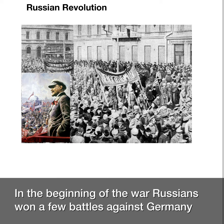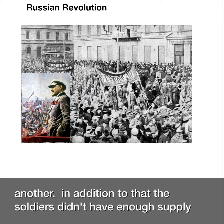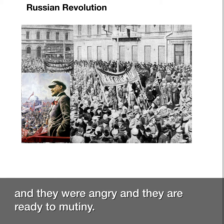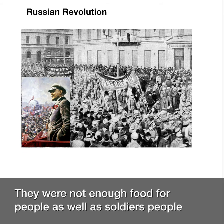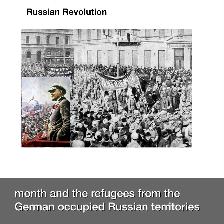In the beginning of the war, Russians won a few battles against Germany, but soon they were losing battles one after another. Soldiers didn't have enough food or clothing, so they became very discontented, angry, and ready to mutiny. There was not enough food for people or soldiers — people were starving. Soldiers started to desert at a rate of 34,000 per month, and there were millions of refugees from German-occupied Russian territories.